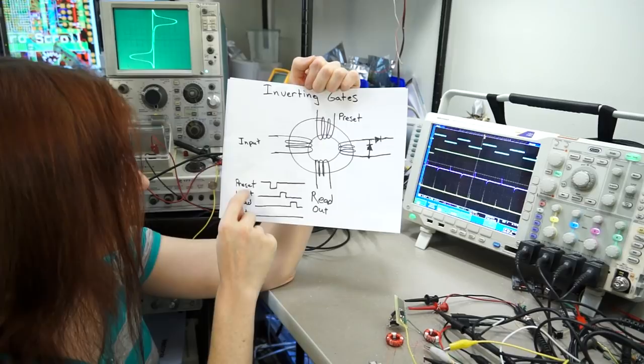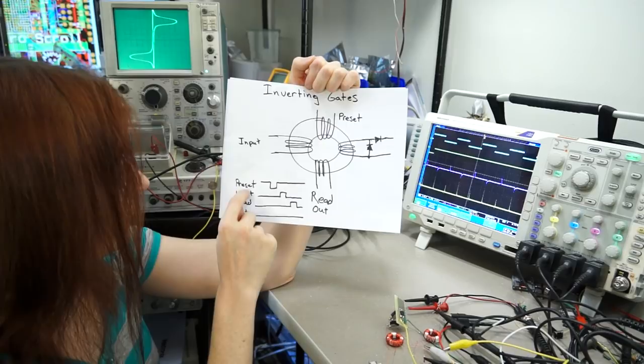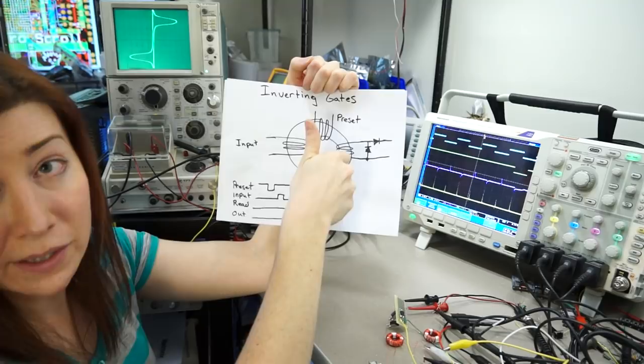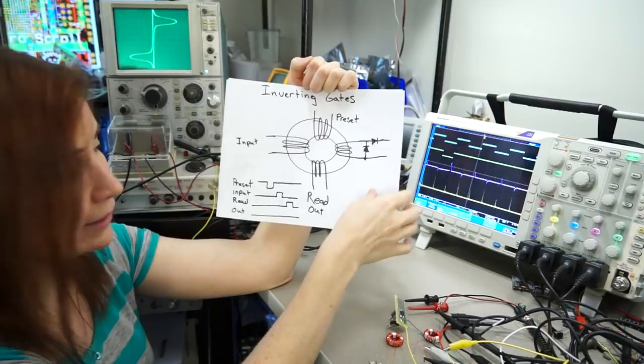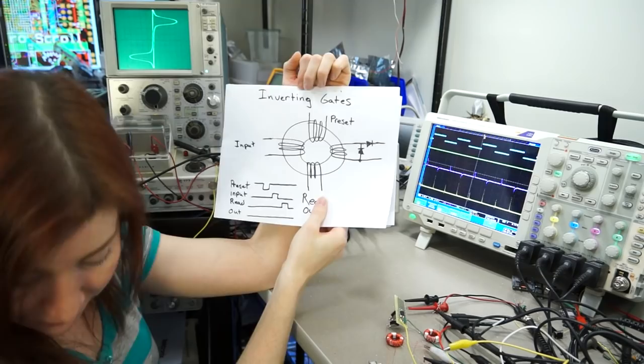If the preset happens and there's no input, then the polarization would be in such a way that there would be an output pulse. And then when the readout happens, there would be an output pulse, and that would be your inverted type gate. And then you can have multiple inputs on this type of gate also, to do inverting type gates, like NAND gates.